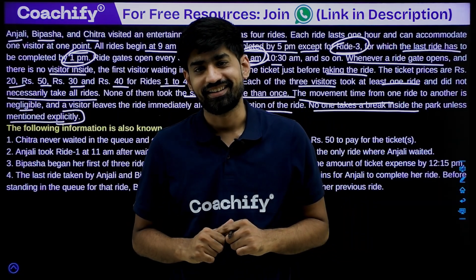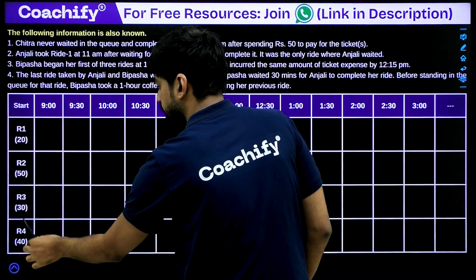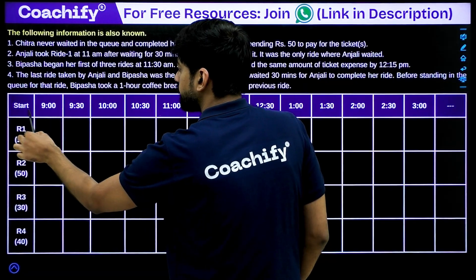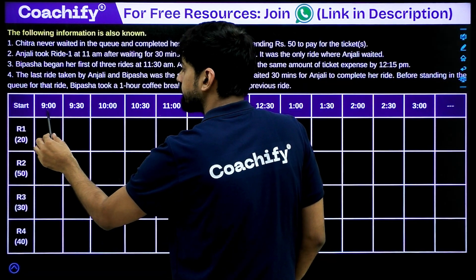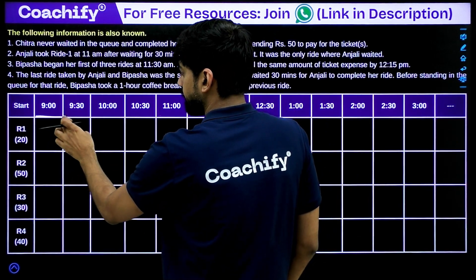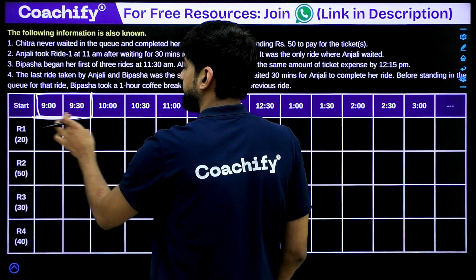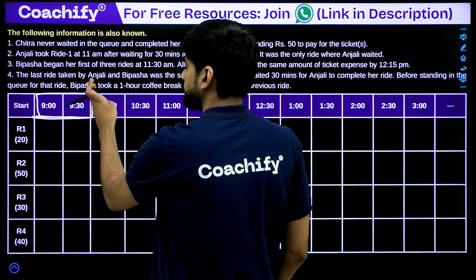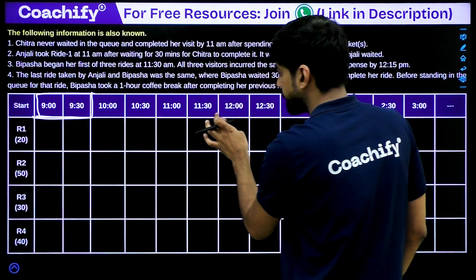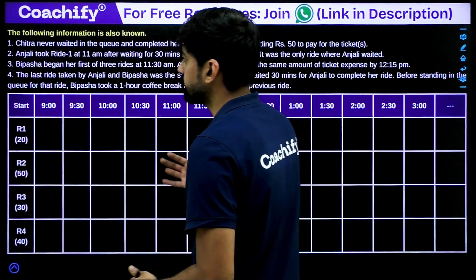Now we begin solving the puzzle. This is our table — with four rides: Ride 1, Ride 2, Ride 3, and Ride 4, with their respective ticket prices. The starting times are: 9 to 9:30, 9:30 to 10, and so on — each slot is 30 minutes. So if a ride begins at 9, it ends at 10, then another ride starts at 10. These are the start times, and we'll fill this table using the additional information points.